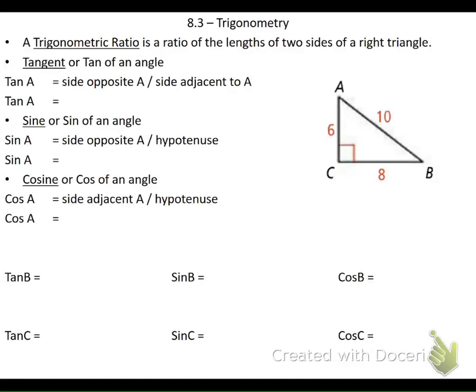Today we're going to be continuing to learn about right triangles, to find sides and angles. We can use something called trigonometry. A trigonometric ratio is just a ratio of the length of two sides of a right triangle. These three trig ratios - sine, cosine, and tangent - you can only use them with right triangles. The definition of tangent is the side that is opposite over the side that's adjacent, so we write it as opposite over adjacent.